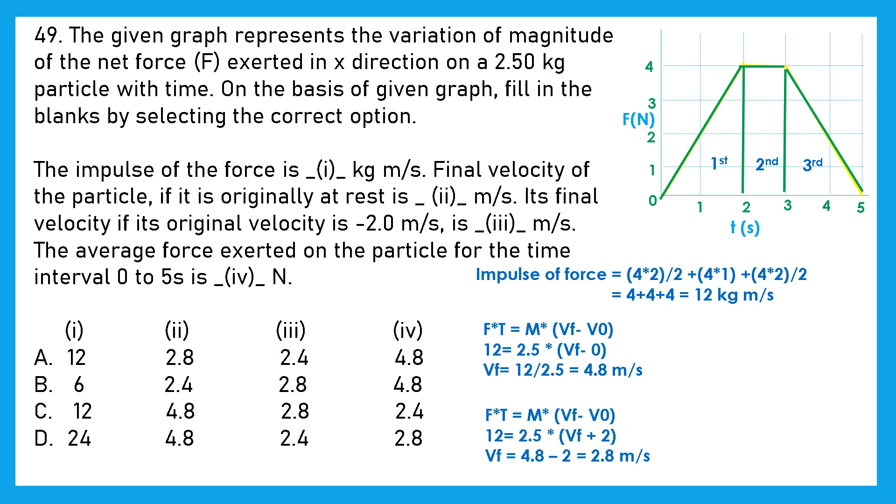Now moving to the third one, we have to find the final velocity if the original velocity is minus 2. In the same formula, we will put original velocity as minus 2 and we will get the final velocity as 2.8. You can see currently on the screen.